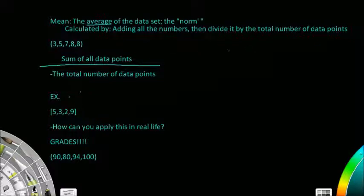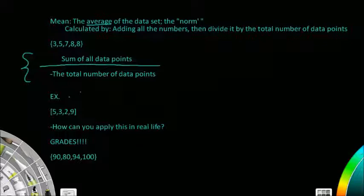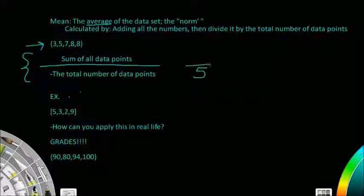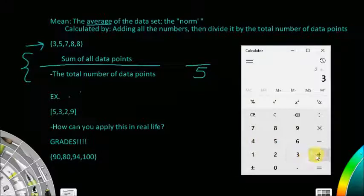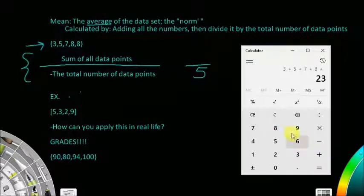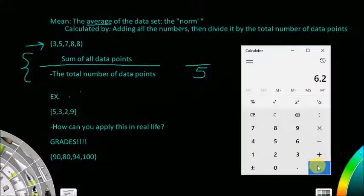So I've written out some data points. Data points are just numbers — I use that term because we usually do this when dealing with data. For the first example, let's count how many numbers there are total: one, two, three, four, five — so five numbers. Now add all the points: three plus five plus seven plus eight plus eight equals thirty-one. Thirty-one divided by five is six point two.